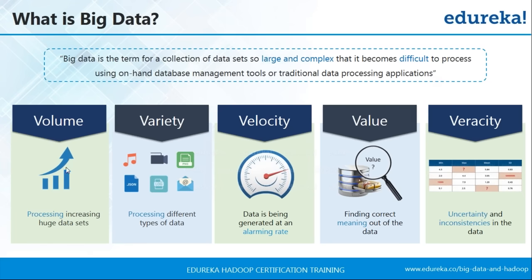The first V is Volume. The amount of data a client is using is so huge that it becomes increasingly difficult to store it in traditional systems — and then it is time to approach a solution. The next V is Variety. We are dealing with huge volumes of data coming from a variety of sources. We're dealing with MP3 files, video files, images, JSON — all different kinds. MP3 and video files are unstructured data, JSON files are semi-structured, and there is some structured data as well. The major problem is that almost 90% of the data is unstructured.